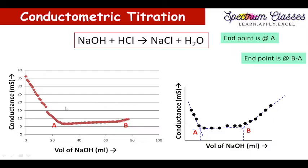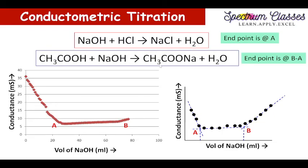For NaOH + HCl we are getting this kind of graph, and as you have seen: decrease, then increase, then a constant increase, and then a little more increase. These are my results from this experiment. For NaOH + HCl we get the end point at A, and for the equation CH3COOH + NaOH we get the end point as B minus A. Now the calculation part.